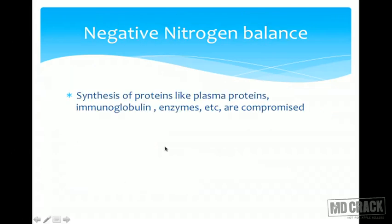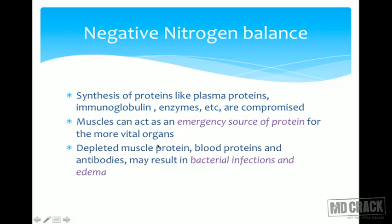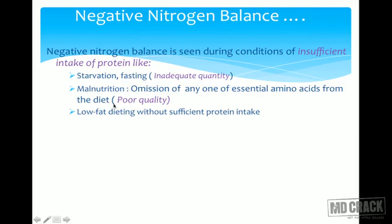In negative nitrogen balance, synthesis of plasma proteins, immunoglobulins, and enzymes gets compromised. Muscles act as an emergency protein source for more vital organs, leading to depleted muscle protein. Blood proteins and antibodies are reduced, making the person more prone to bacterial infections. Importantly, low plasma albumin leads to reduced colloid osmotic pressure, resulting in edema.